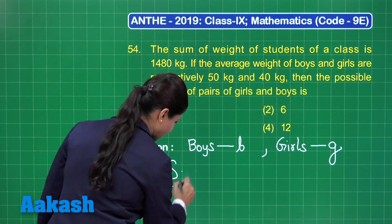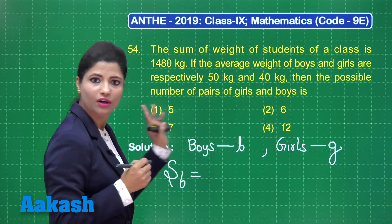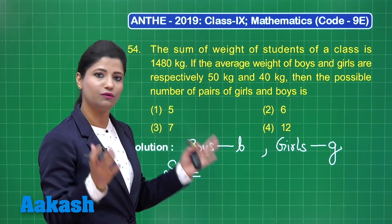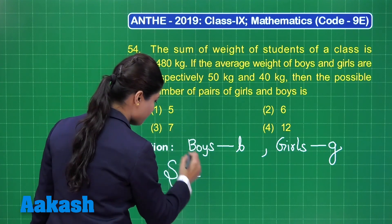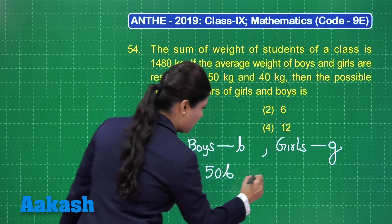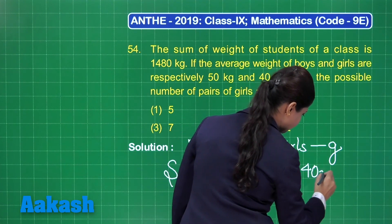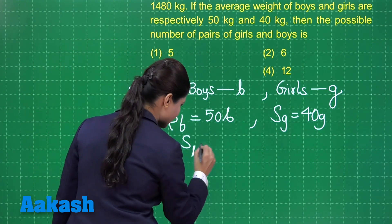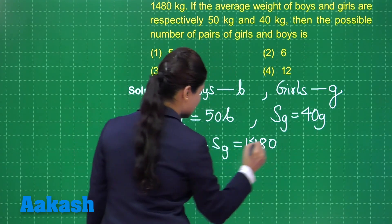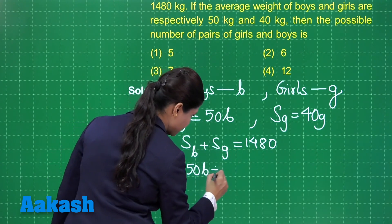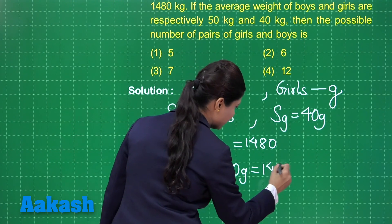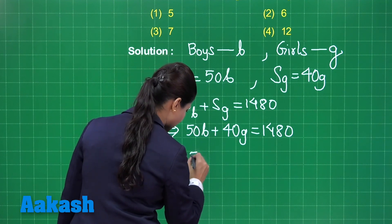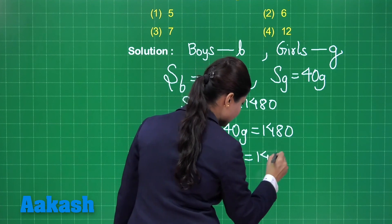Let us consider the number of boys in the class is B and the number of girls is G. The sum of weight of all the boys is given by average weight multiplied by number of boys. Average equals sum of weights divided by number of boys. So the sum of weight of boys is 50B, and the sum of weight of girls is 40G. Since the total weight is 1480 kg: 50B plus 40G equals 1480, which simplifies to 5B plus 4G equals 148.